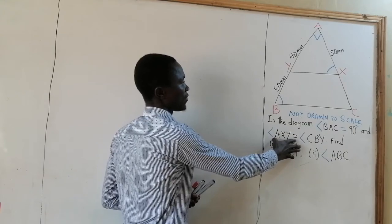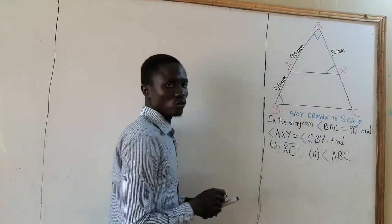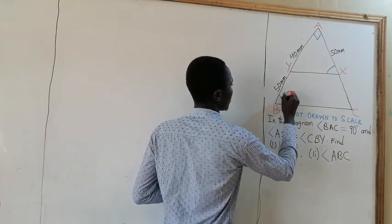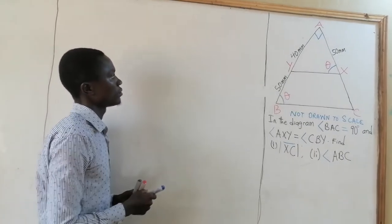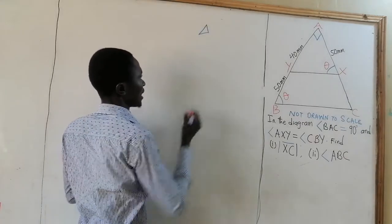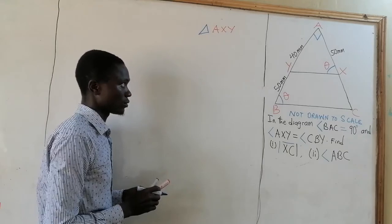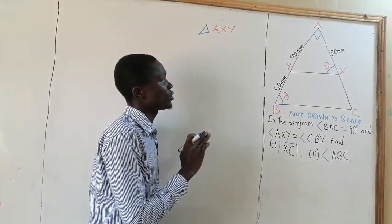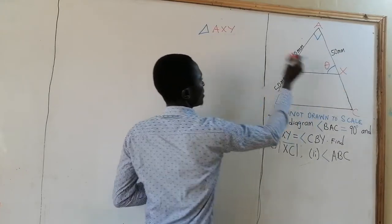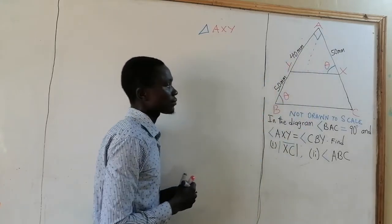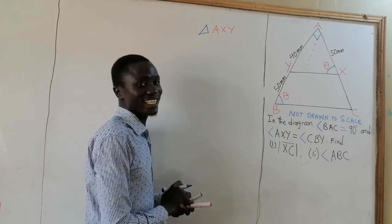Now from the question, we have angle AXY equal to angle CBY. So let us indicate that angle using theta. Now these two angles are the same. Let us consider triangle AXY. If you consider triangle AXY, it is a right-angled triangle. We will first look for the hypotenuse, and the hypotenuse is the line facing the 90 degrees. So it means that XY is the hypotenuse of triangle AXY. Now we are going to consider angle theta and find it.